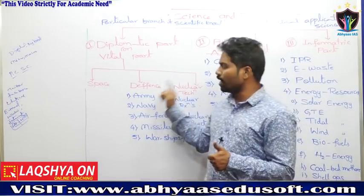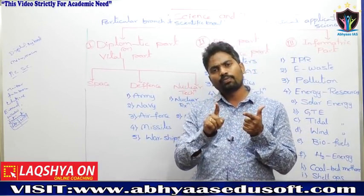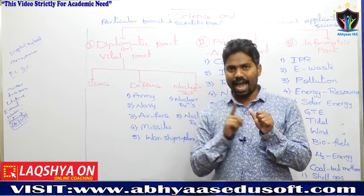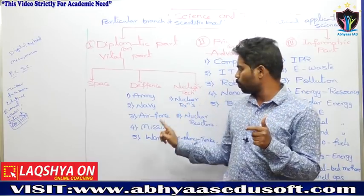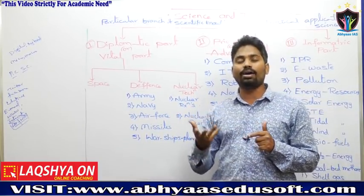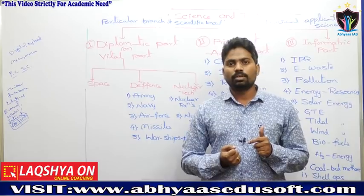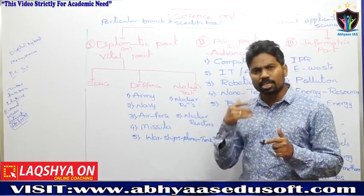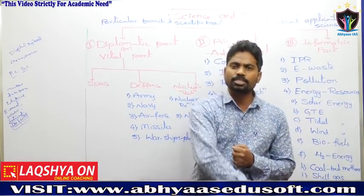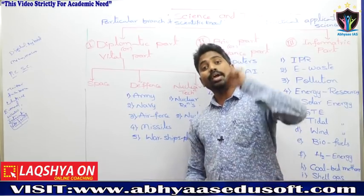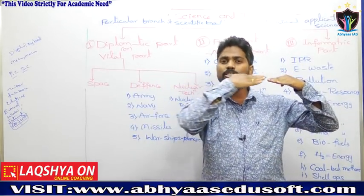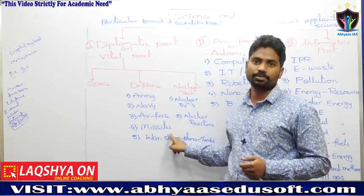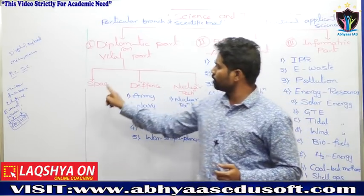In the defense chapter, we will discuss the army, air force, and navy — war tanks, warships, war planes, missiles, and torpedoes. Missiles are of many types: surface-to-surface, surface-to-air, and air-to-air missiles, among other types.